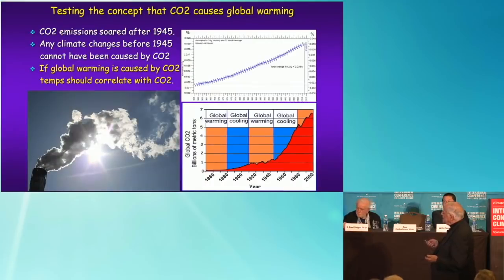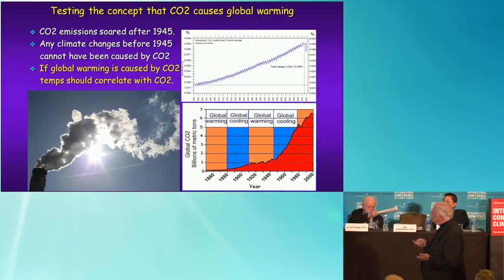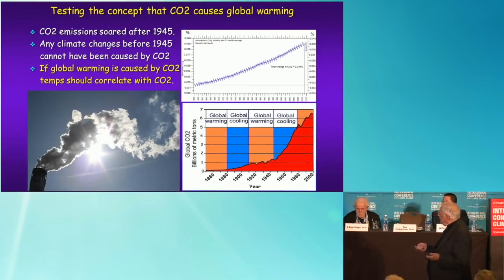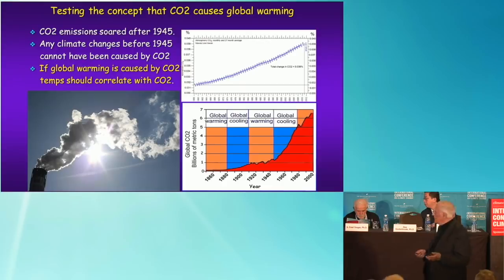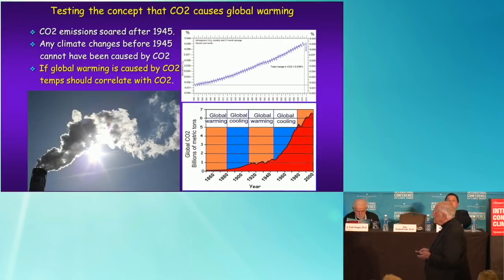We want to test the concept that CO2 causes global warming. What we know is that CO2 emissions soared after 1945, post-World War II, at a very sharply increased rate. Any climate changes that occurred before 1945 can't be blamed on CO2 because it hadn't risen yet. The test is that if global warming is caused by CO2, then temperature should correlate with CO2.